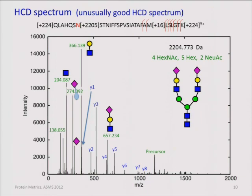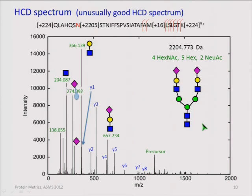Here's an example of an HCD spectrum — an unusually good one, literally one in 5,000 spectra; I picked the best one in a dataset with 5,000 HCD scans. In this case you do have a series Y1 through Y8. The biggest peaks in the spectrum are the glycan peaks: the biggest one is HexNAc-Hex, and there's a big one for HexNAc-Hex-sialic acid — a pretty common sialylated glycan.